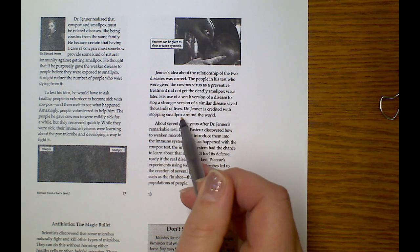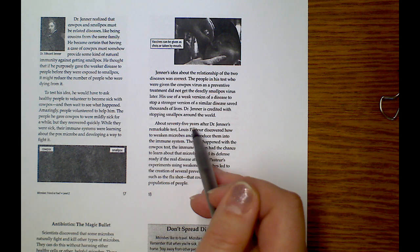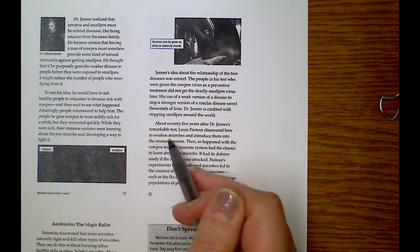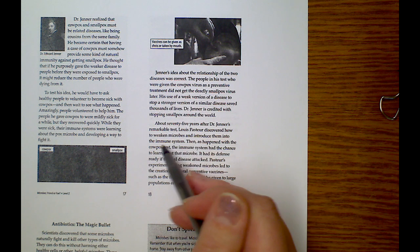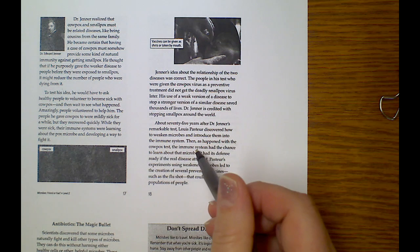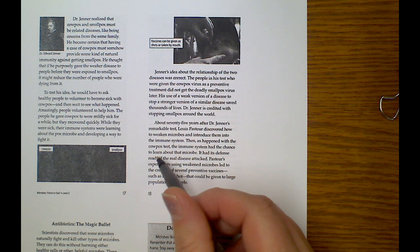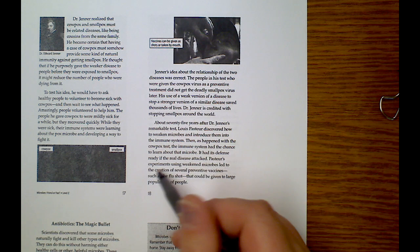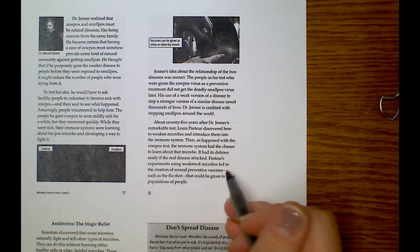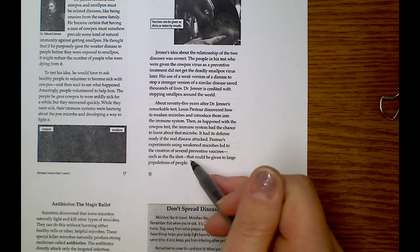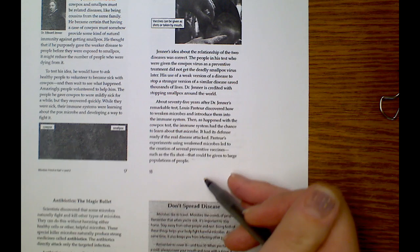Dr. Jenner is credited with stopping smallpox around the world. About 75 years later after Dr. Jenner's remarkable test, Louis Pasteur discovered how to weaken microbes and introduce them into the immune system. Then, as happened with the cowpox test, the immune system had the chance to learn about the microbe and had its defense ready for the real disease and attacked. Pasteur's experiments using weakened microbes led to the creation of several preventative vaccines, such as the flu shot that could be given to a large population of people.